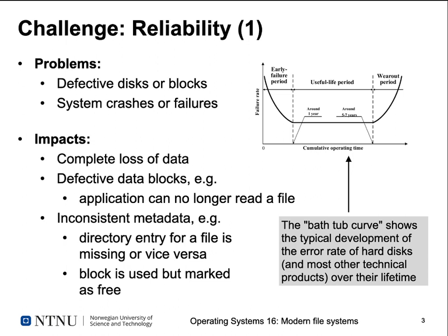You can also have problems when the operating system crashes or you have a power failure — you were in the middle of a write and some data was written while other data was still in main memory and is lost. The impacts include complete data loss if a disk fails, single defective data blocks preventing file access, and inconsistent metadata — for example a missing directory entry, or a block that's actually in use marked as free and liable to be overwritten.